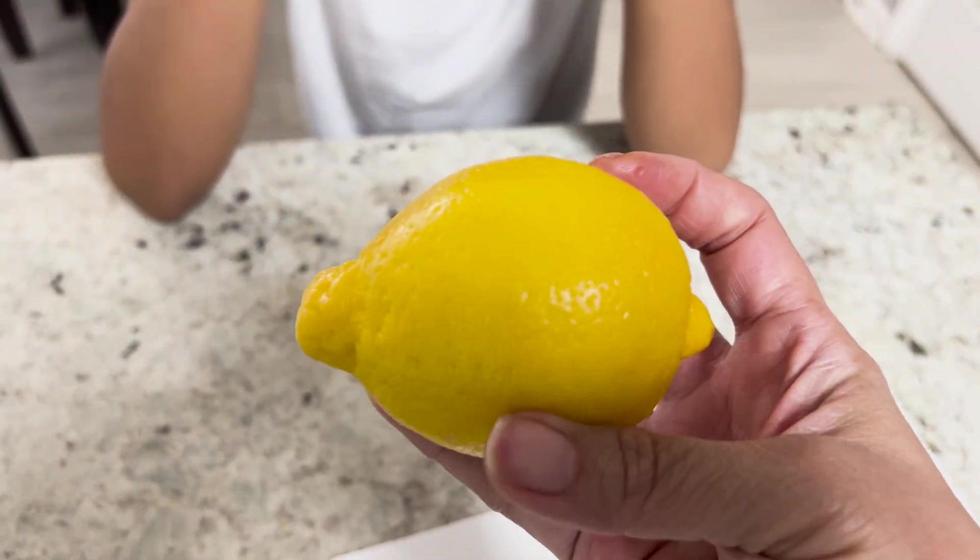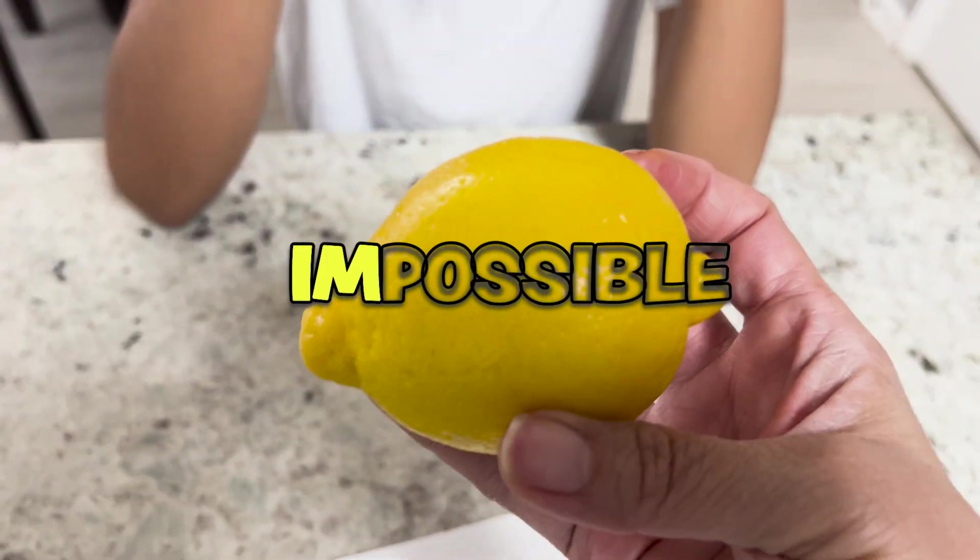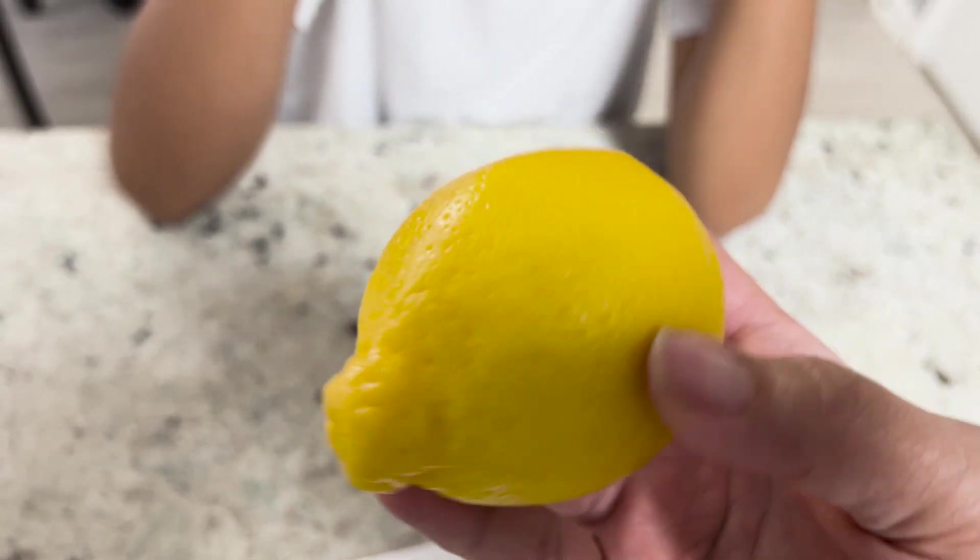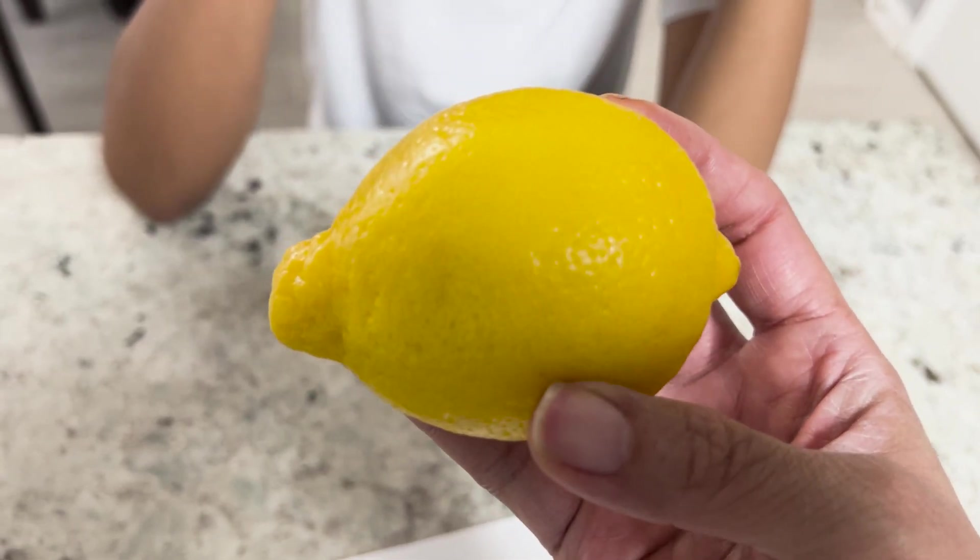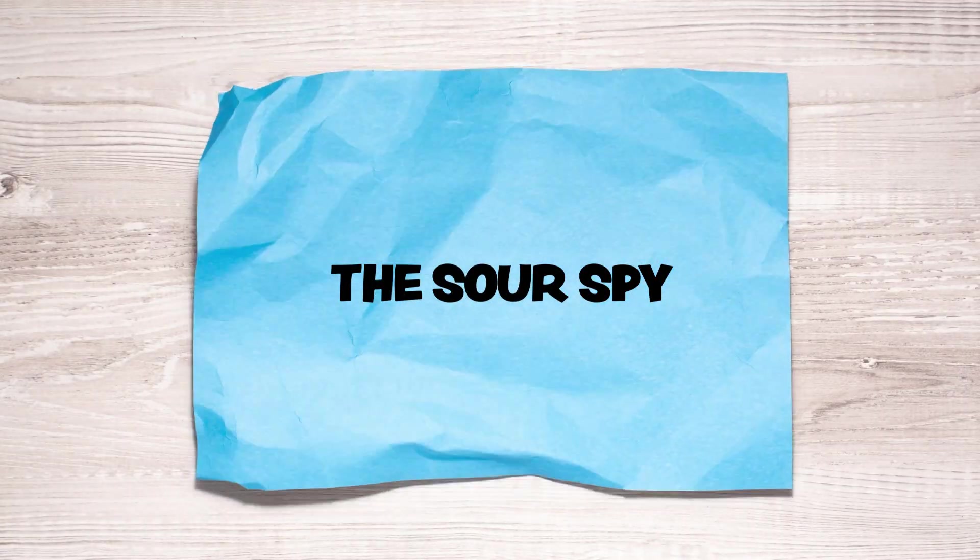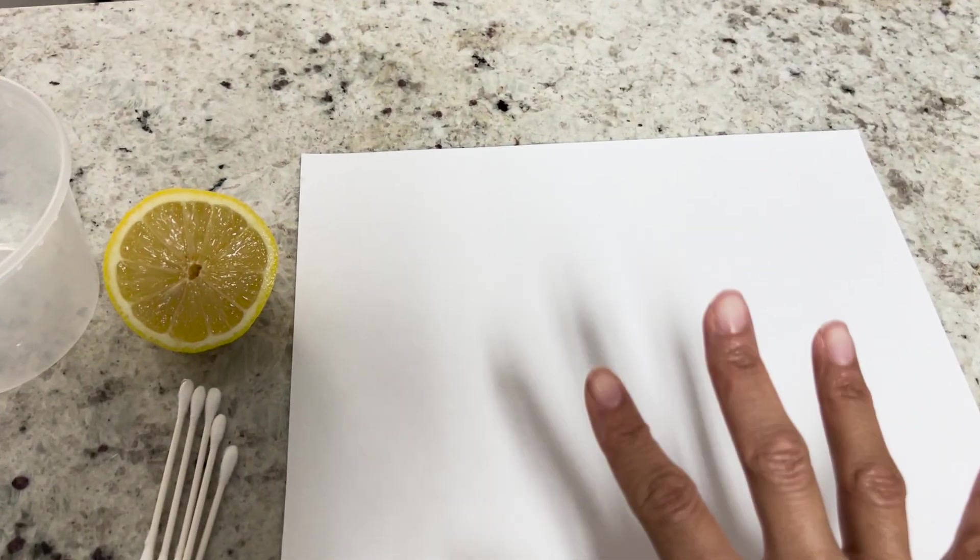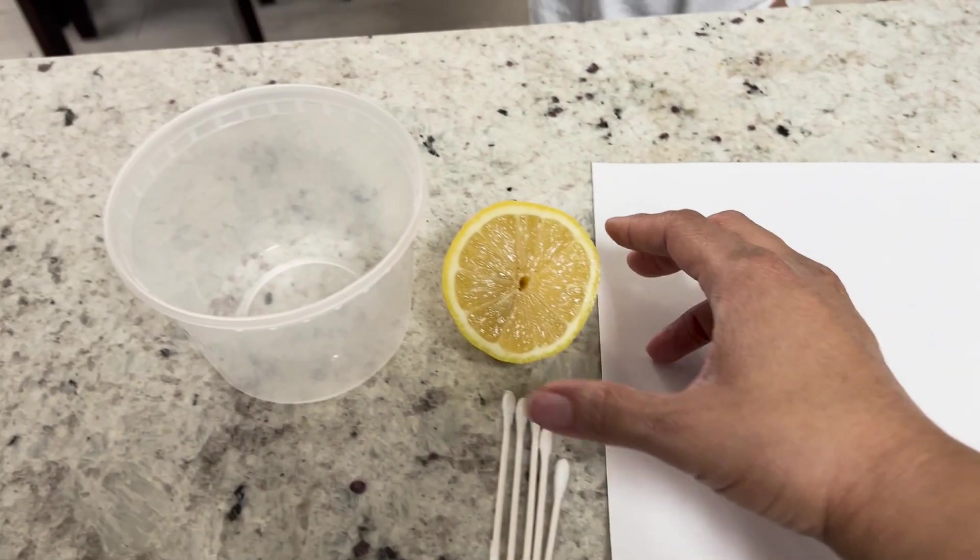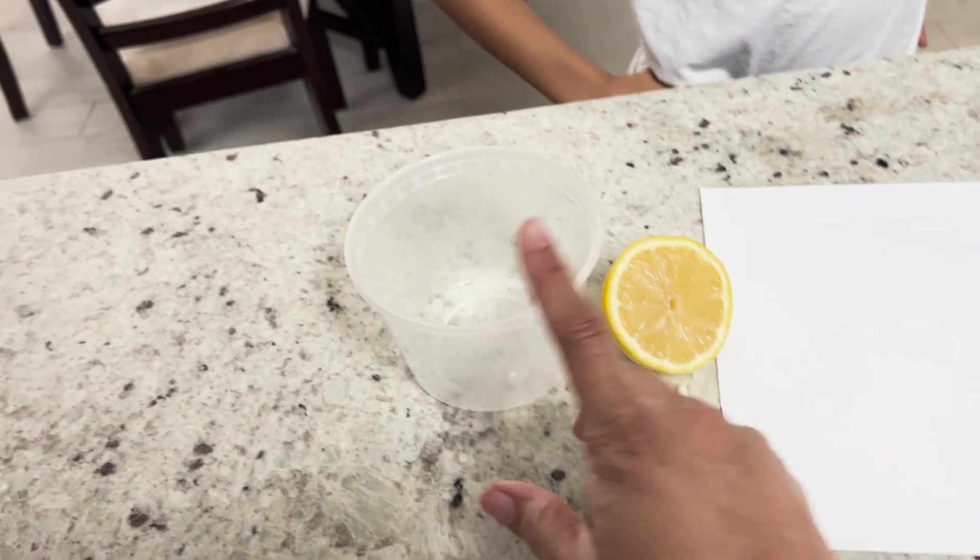Awesome. Well, what if I told you this is my secret agent pen? A lemon? That's impossible. No, it's not. I'm calling this science experiment the Sour Spy. We're going to need a blank white paper, a lemon cut in half, some Q-tips, and a little bowl to squeeze the juice in.